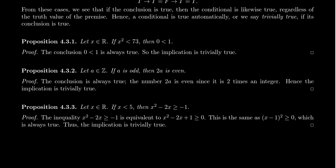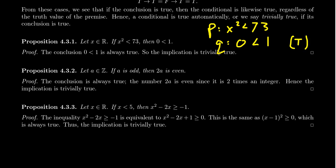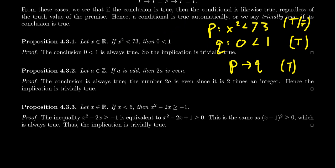To be clear: if P is the statement 'x² < 73' and Q is the statement '0 < 1', then Q is always true. With regard to P, we don't know — it could be true or false depending on the choice of x. But the implication P implies Q is a true statement regardless of whether x² is less than 73 or not. This is why we call it trivially true — it didn't actually depend on the premise.